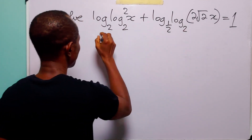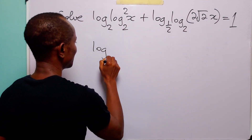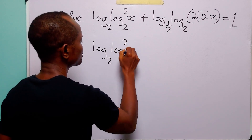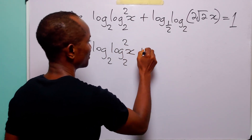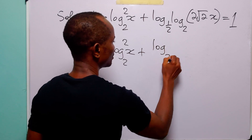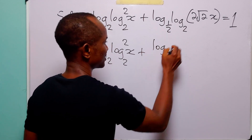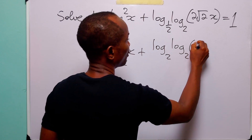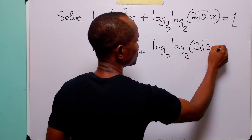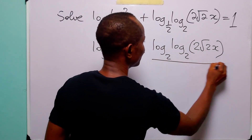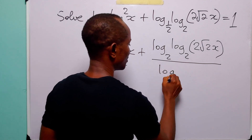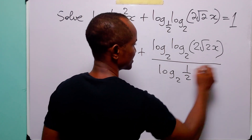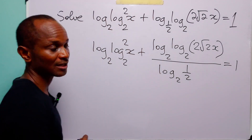So we have that this equation can be written as log to base 2 of log to base 2 squared of x, plus log to base 2 of log to base 2 of 2 root 2 x divided by log to base 2 of the old base, that is half. And everything is still equal to 1.